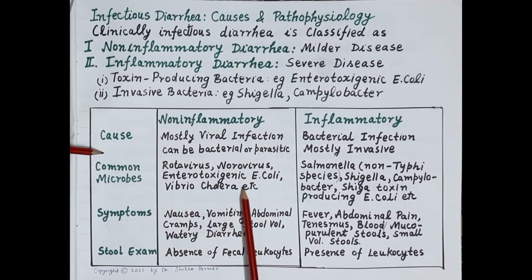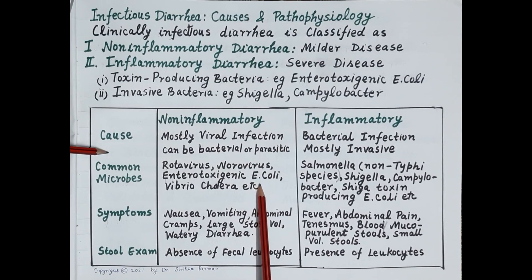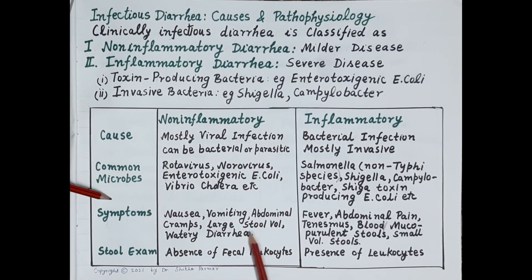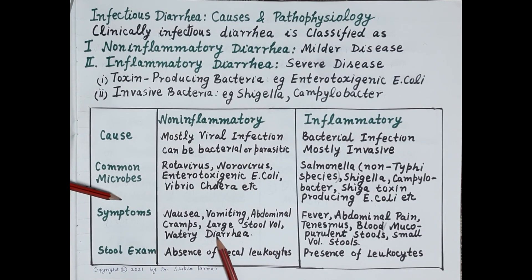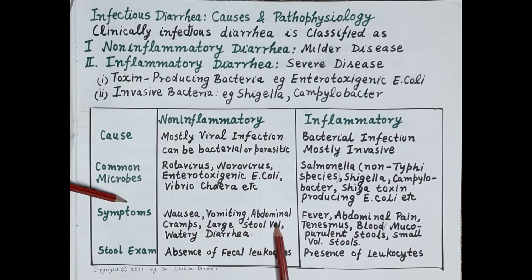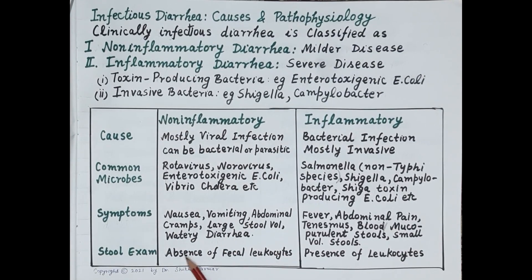Non-inflammatory diarrhea is mostly caused by viral infection but can also be bacterial or parasitic. Common microbes include rotavirus, norovirus, enterotoxigenic E. coli, and Vibrio cholerae. Symptoms include nausea, vomiting, abdominal cramps, large stool volume, and watery diarrhea. Importantly, non-inflammatory diarrhea is watery with no blood in the stools.